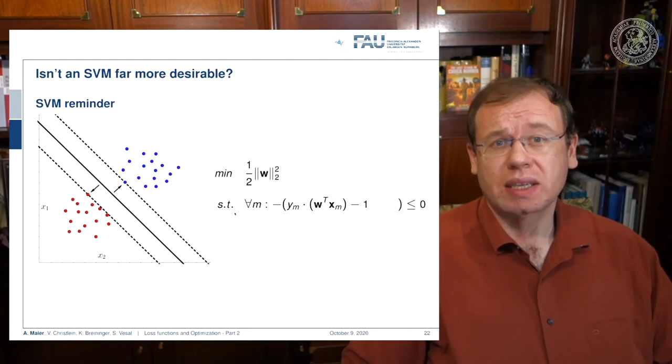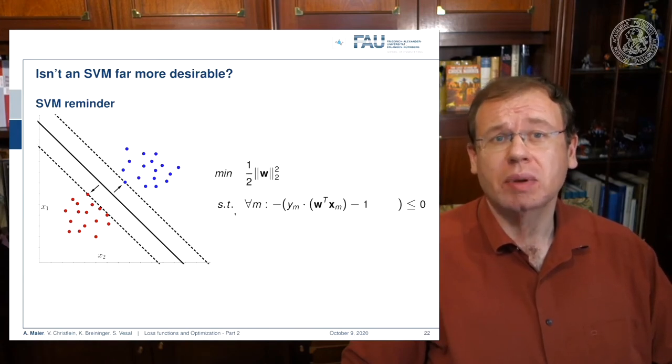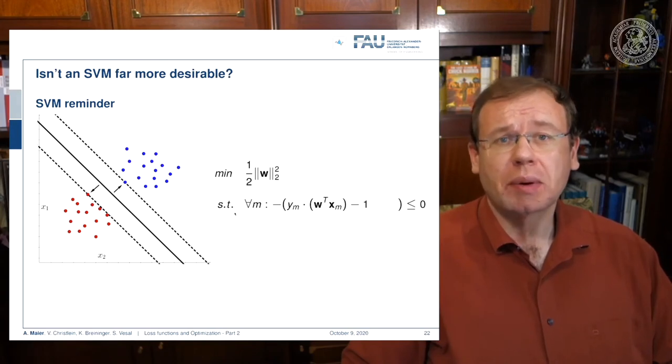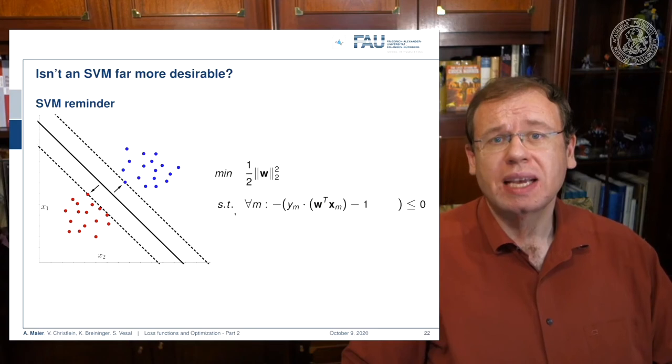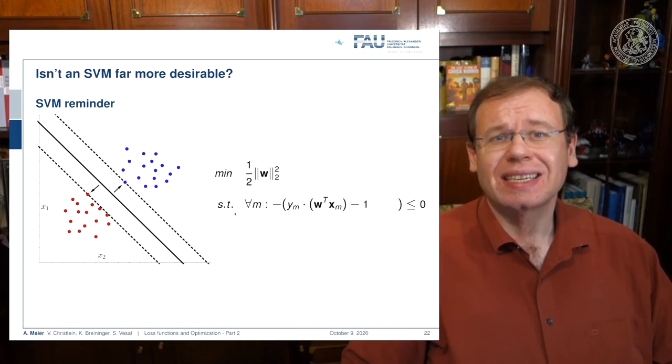SVMs compute the optimally separating hyperplane. It's also computing some plane that separates two classes with the idea that it wants to maximize the margin between the two sets. So you try to find the plane, or here in this example the line, that produces the maximum margin. The hyperplane or the decision boundary is the black line, and the dashed lines indicate the margin here.